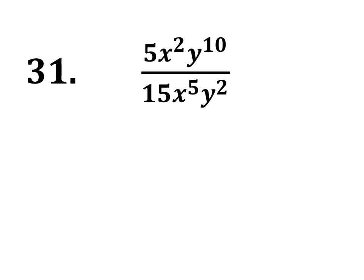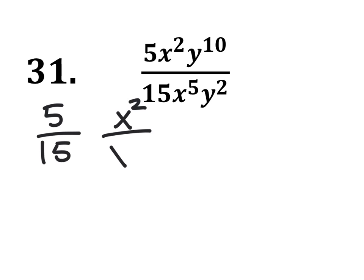For number 31, is it just division? No. Print the C so we don't have to multiply any of the exponents — we'll just subtract them. But we'll separate this, alright? So we've got 5 over 15, x to the power of 2 over x to the power of 5, y to the power of 10 over y squared.